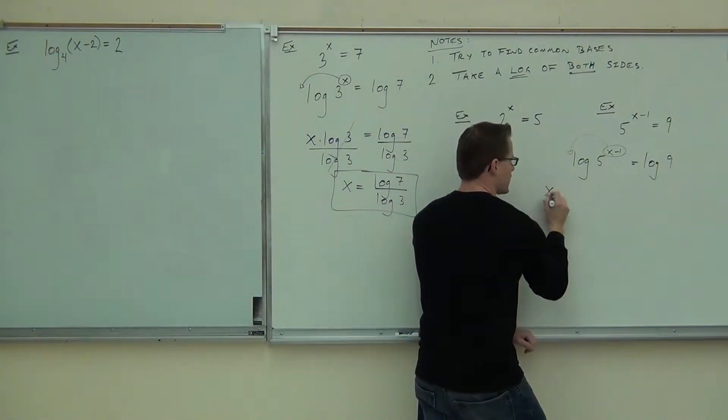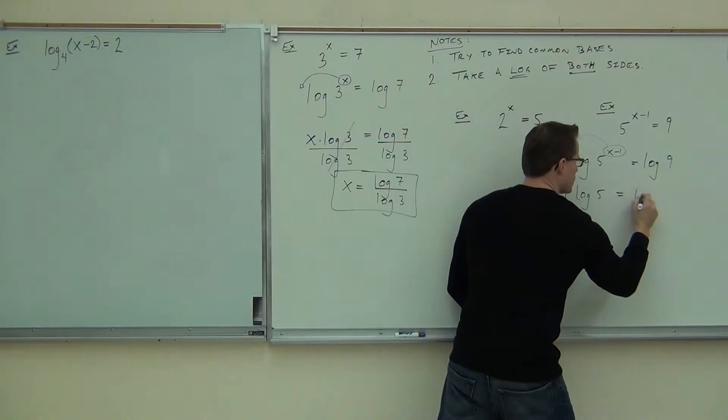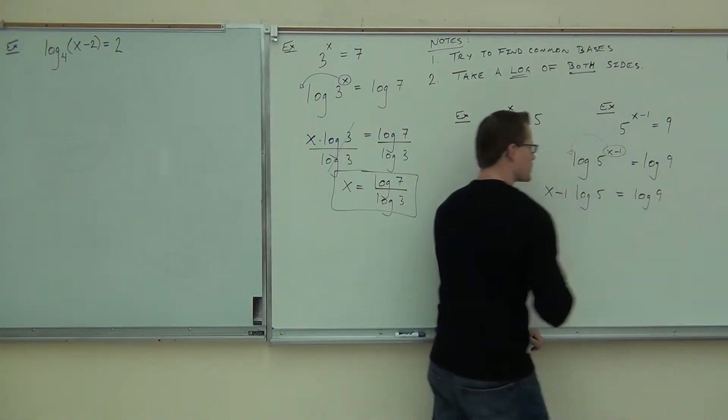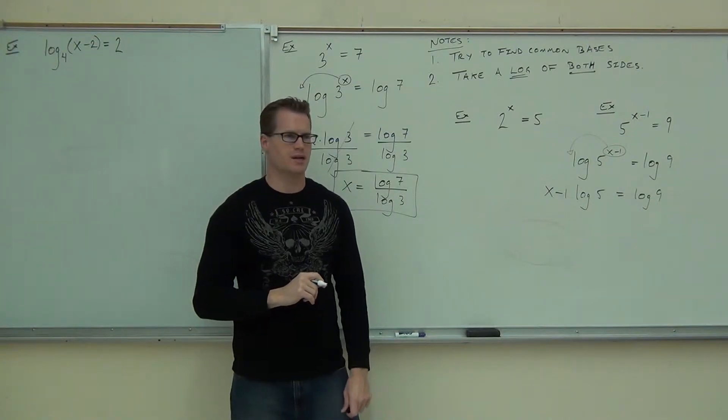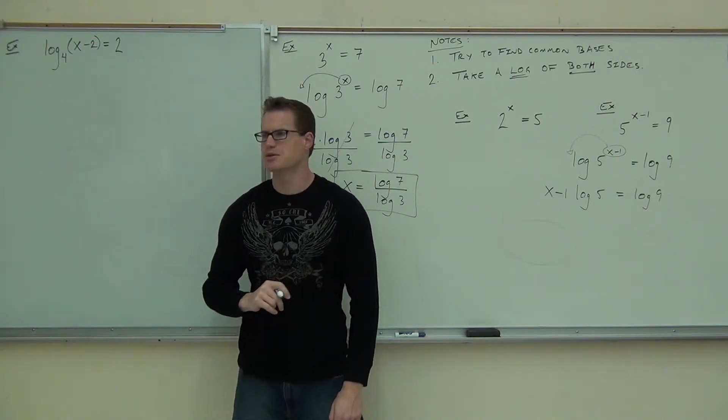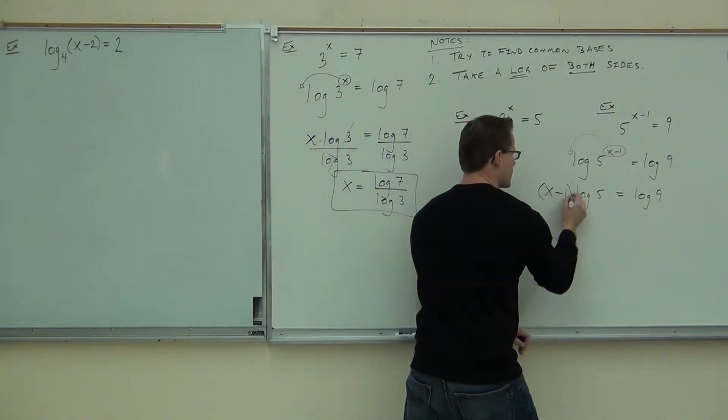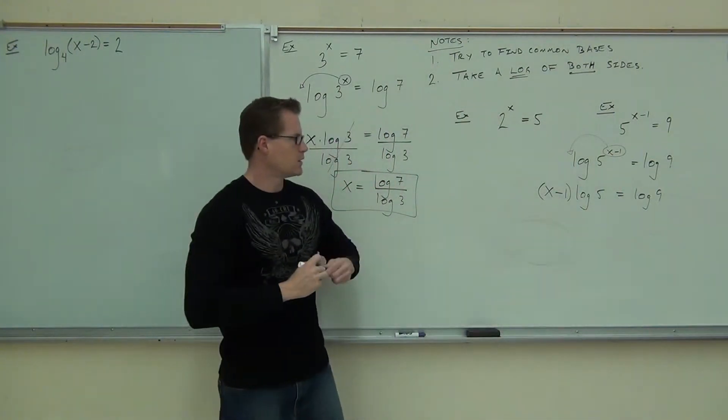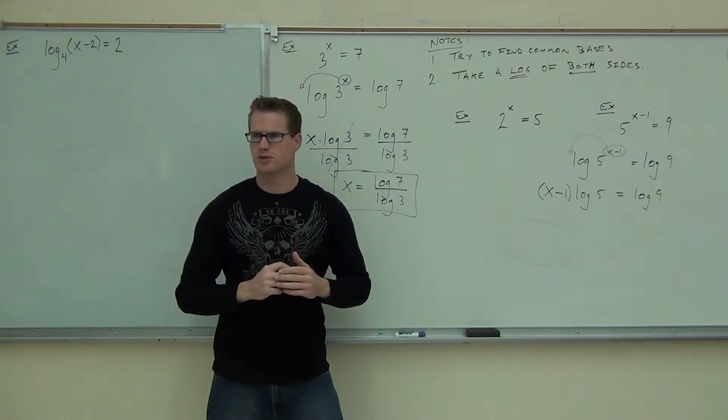So we're going to get (x-1) log of 5 equals log of 9. Now I've made one pretty major mistake here. What's the mistake that I've made? I've omitted something that I need. Parentheses. Yeah, you absolutely have to have the parentheses because you're multiplying that entire exponent. So that's kind of important. Not kind of. It's really important. You all right with this one so far?